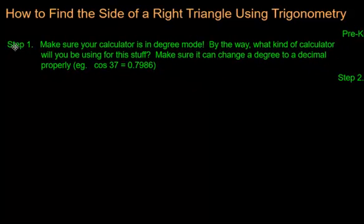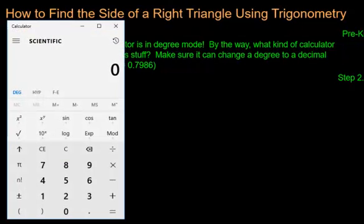Now, the next step is make sure your calculator is in degree mode. By the way, what kind of calculator will you be using for this stuff? Make sure it can change a degree to a decimal properly. I will show you two different types of calculators right now. There's an old-fashioned type, which surprisingly are on iPhones, where it looks something like this. You want to make sure that the calculator is in degree mode. So right over here I can see it's in degree mode by the D-E-G. A lot of calculators will show D-E-G or just D.